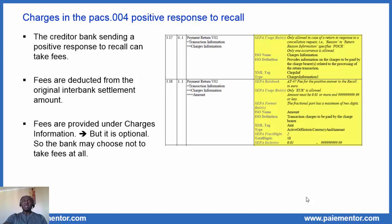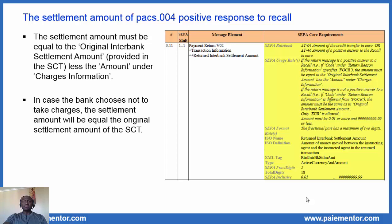How do the fees impact the interbank settlement amount? The answer is very simple, and this brings us to the next specificity: the settlement amount of the PAX4 positive response to recall. The settlement amount must be equal to the original interbank settlement amount provided in the SEPA credit transfer, less the amount under charges information. So the amount might be different from the one received in the SEPA credit transfer message. In case the bank chooses not to take charges — which is allowed in SEPA — the settlement amount will be equal to the original settlement amount of the SEPA credit transfer. In practice, banks do take charges; I will say this is even the norm, because it is an opportunity to get some additional revenue.